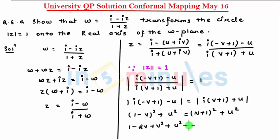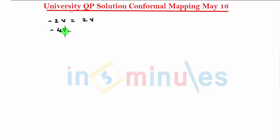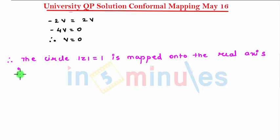Expanding: 1 - 2v + v² + u² = v² + 2v + 1 + u². Cancelling v², u², and 1 from both sides, we get -2v = 2v, so -4v = 0, therefore v = 0. Since v = 0, the circle |z| = 1 is mapped onto the real axis in the w-plane. Thank you for watching the video on In 5 Minutes.